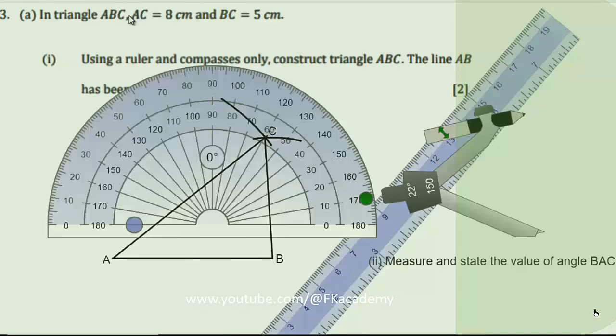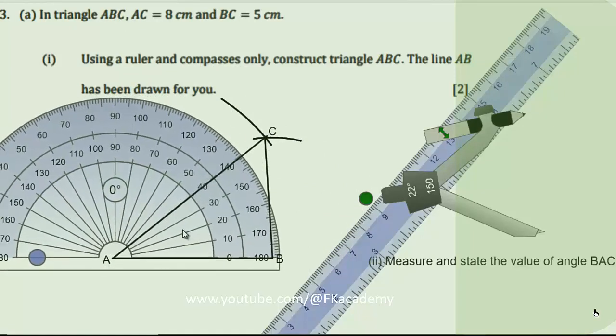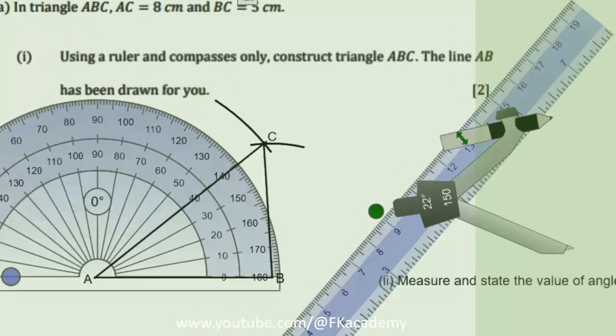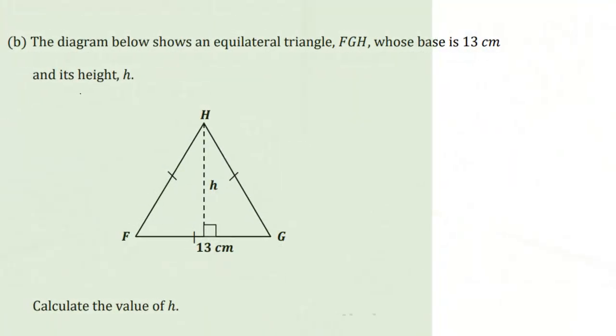Let's label that point, point C. Now we are to measure and state the value of angle BAC. Use your protractor and measure like this. You can see the value of the angle is 40 degrees. Therefore, angle BAC equals 40 degrees.